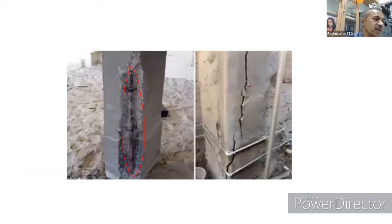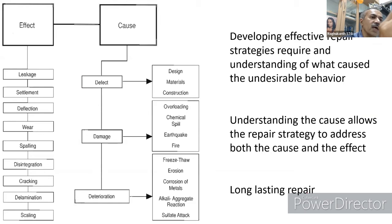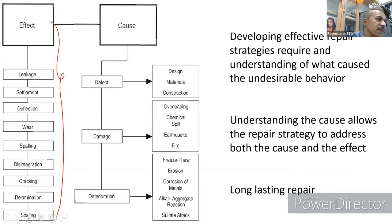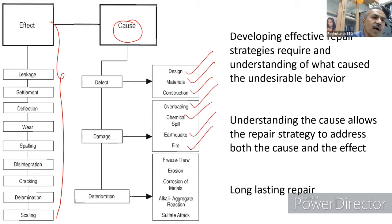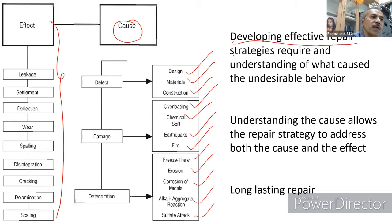For effective repair strategies, you must understand the cause — the inverse problem. Observing leakage, settlement, deflection, wear, or spalling, you must identify whether the cause is design, materials, construction, overloading, chemical spill, earthquake, fire, erosion, corrosion, freeze-thaw, alkali attack, or sulfate attack. Developing an effective repair strategy requires understanding what causes the undesirable behavior — this is the most important thing.